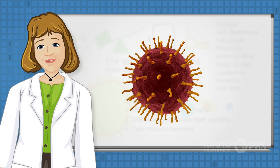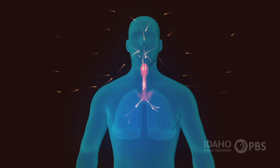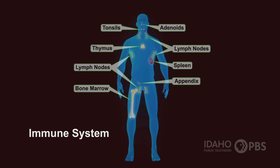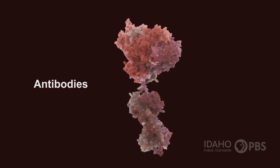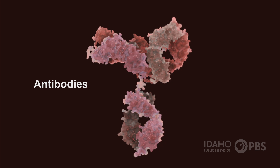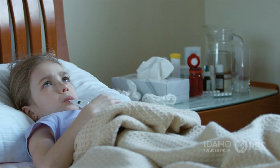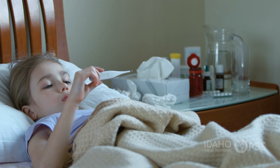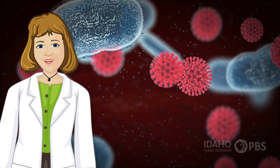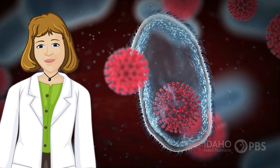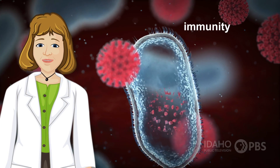But your body doesn't take this attack lying down. When a virus enters the body, special cells in the bloodstream identify the invader and alert the body's immune system. Your body then creates antibodies — chemicals designed to recognize the specific protein coating of the invading virus. Those antibodies attack the virus. A fever is one sign that your body is fighting off an infection. Your body then keeps a kind of protein record of invading viruses, so if one ever attacks you again, your defenses are all ready to fight. That's called immunity.